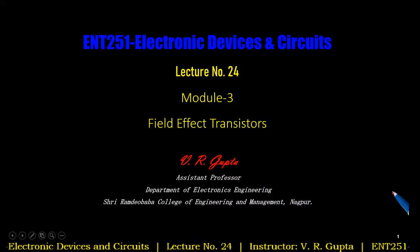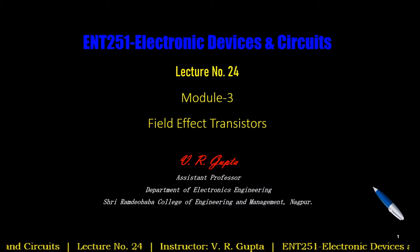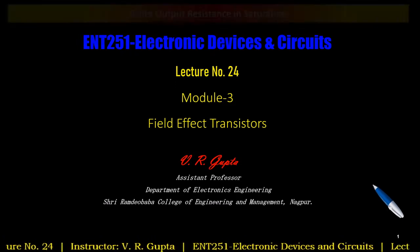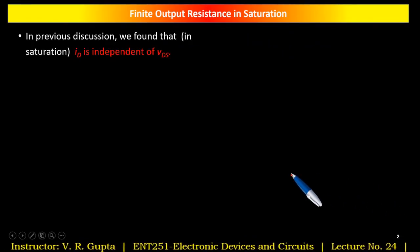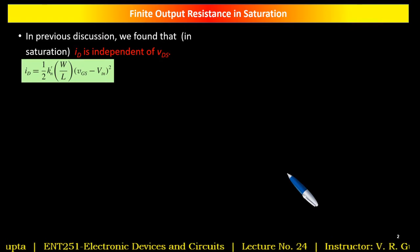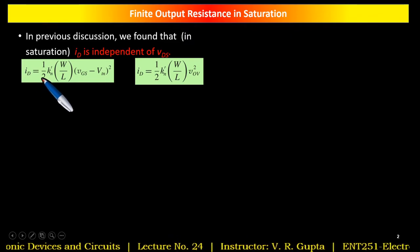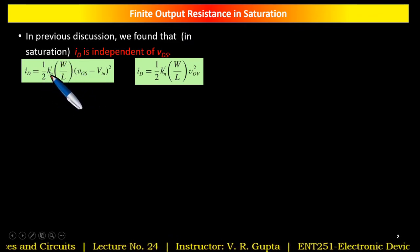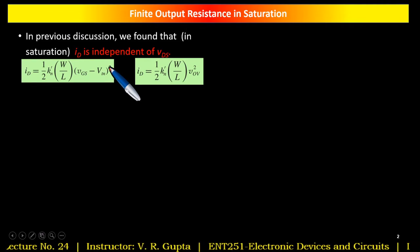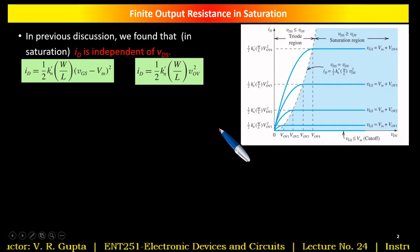Hello and welcome to lecture number 24 of Electronic Devices and Circuits. In this lecture we will talk about the finite output resistance observed in the saturation region of the MOSFET. In our previous discussion we found that ID is independent of VDS. In the drain current equations, ID is dependent on the process transconductance parameter, aspect ratio, and (VGS minus VTN) squared, that is VOV squared — indicating ID is independent of VDS.